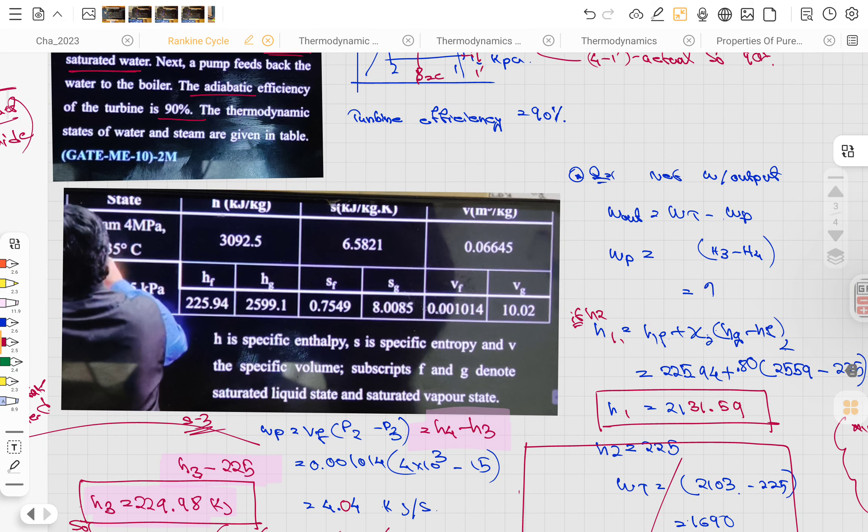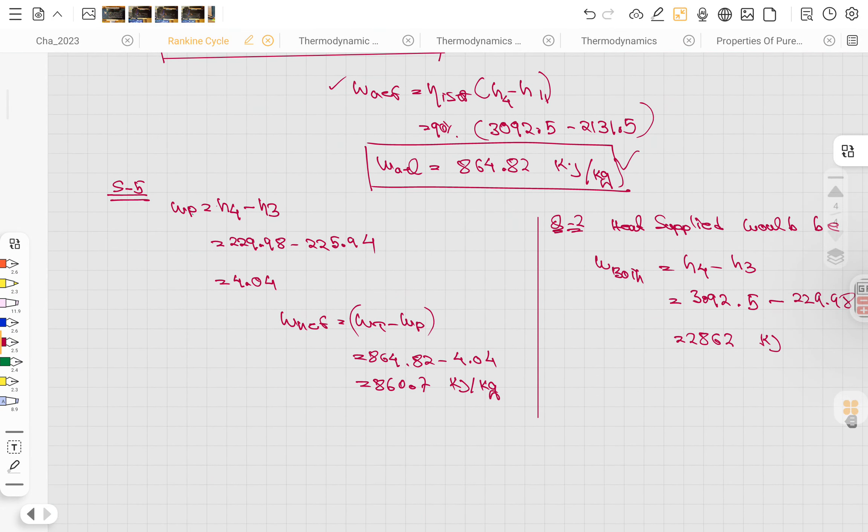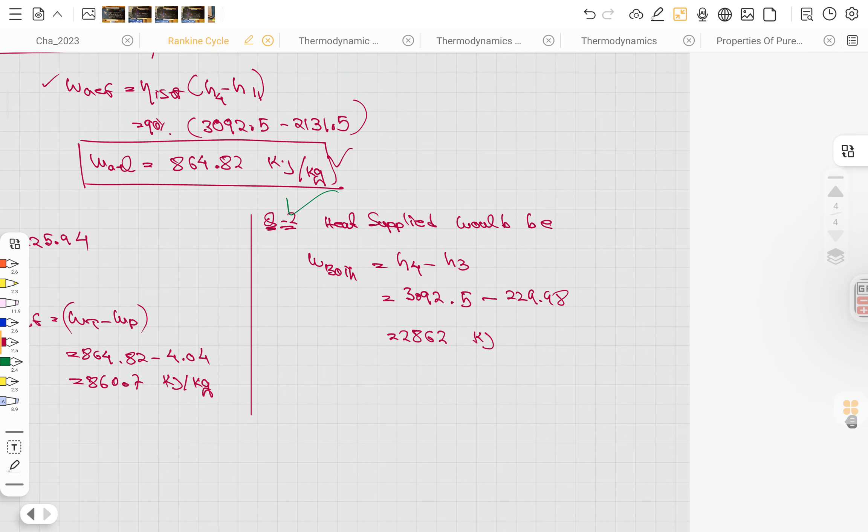The work output of the process. Then the heat applied would be in the condenser process - that is h4 minus h3. That's easy. Got it?